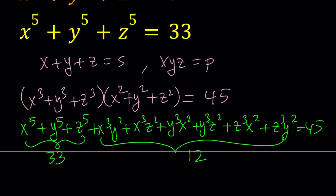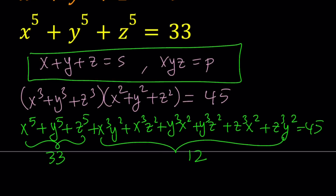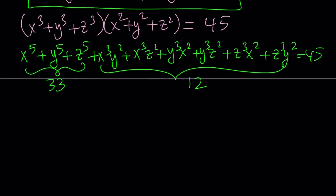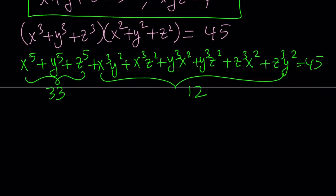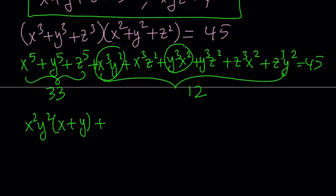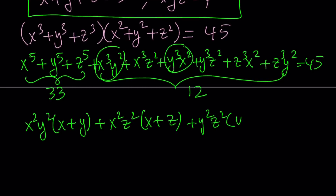Let's go ahead and organize that. I'm going to pair up x cubed y squared with y cubed x squared. We can take out x squared y squared and get x plus y. We can do it for all pairs: x squared z squared with x plus z, and y squared z squared with y plus z. This is supposed to equal 12.